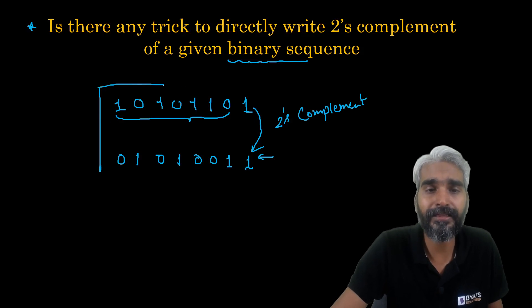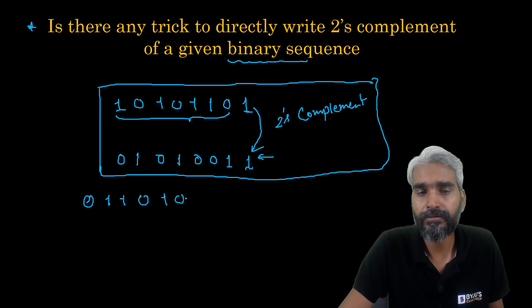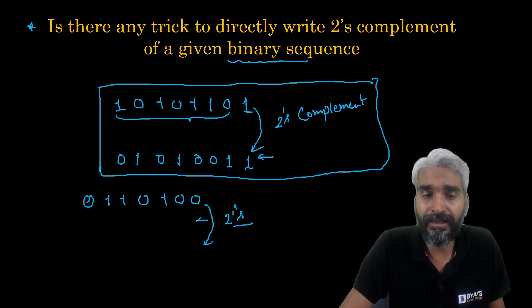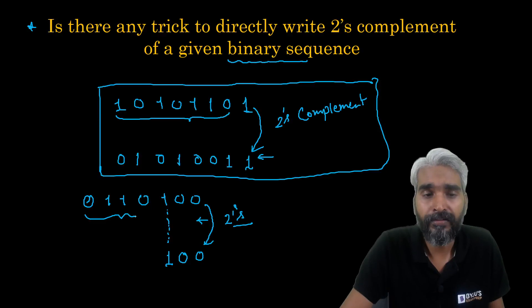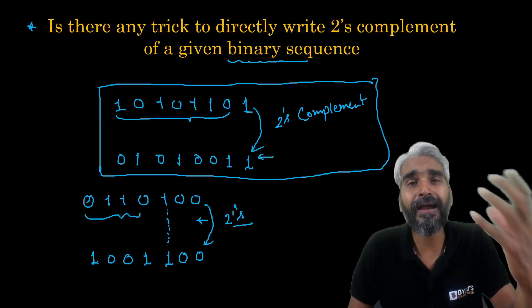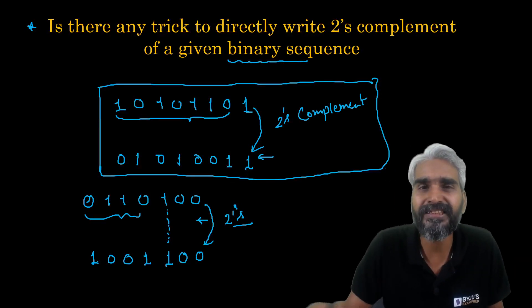Let's take another example to make it more intuitive. Take the number zero one one zero one zero one zero zero. Move from the least significant bit until you encounter the first one, writing every bit as it is up to that first one. Then flip all the remaining bits — the zero becomes one, the ones become zeros, and the zero becomes one. This gives you the two's complement for that binary sequence.